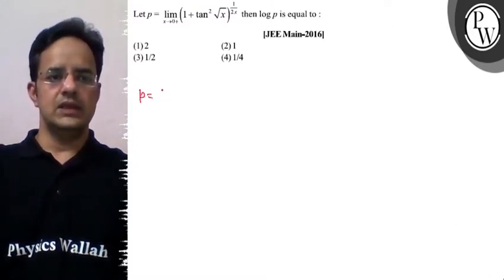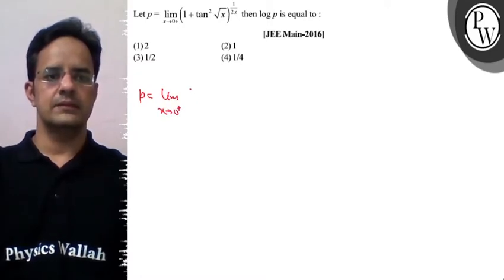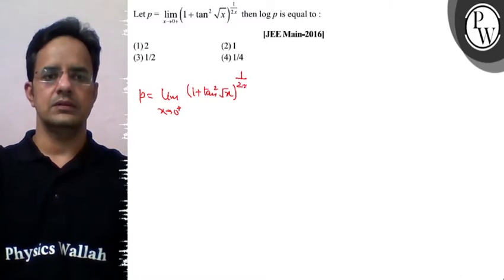So hume given hai that p equal to limit x tending to 0 plus 1 plus 10 square root x raised to power 1 upon 2x